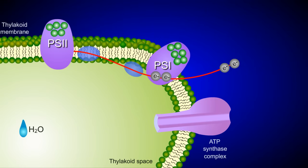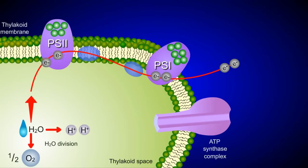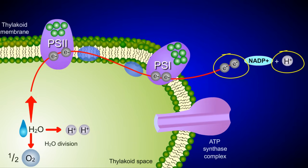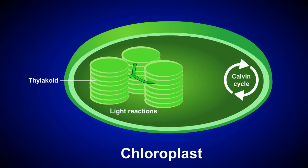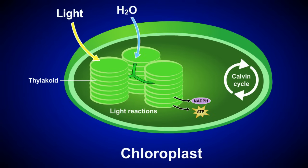Again, water is split to replace the electrons that have moved from Photosystem 2. At the end of this electron transport chain, the energized electrons and a hydrogen molecule are used to reduce NADP+ to NADPH. Let's zoom back out to review.